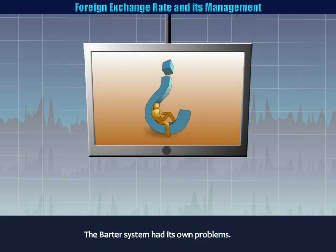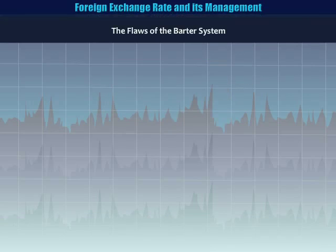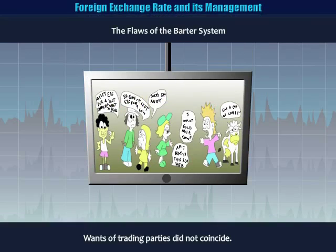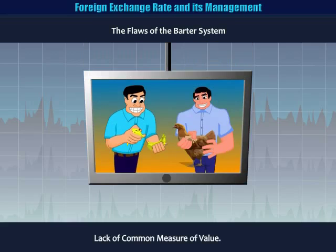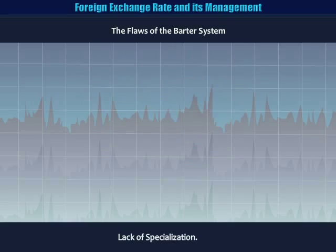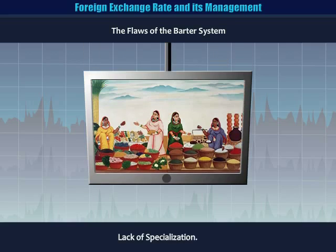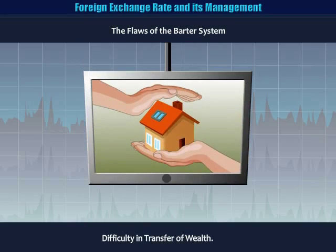But the barter system had its own set of problems. Let us have a quick look at them. The flaws of the barter system: wants of trading parties did not coincide, lack of common measures of value, indivisibility of certain goods, lack of specialization, and difficulty in transfer of wealth.